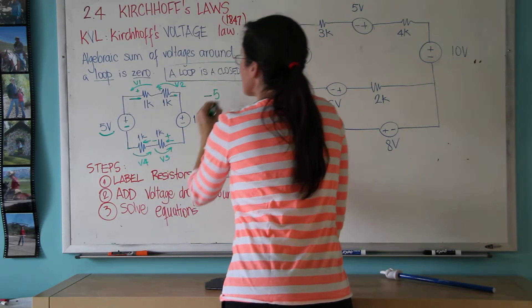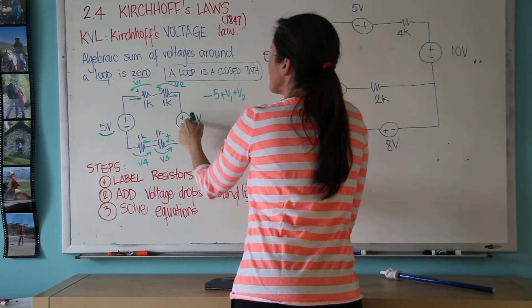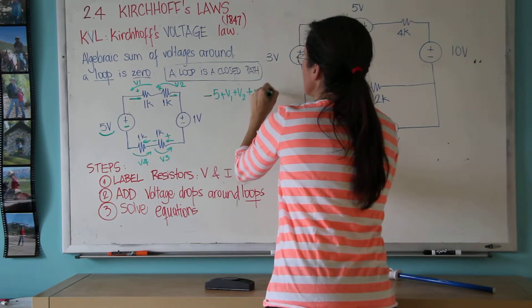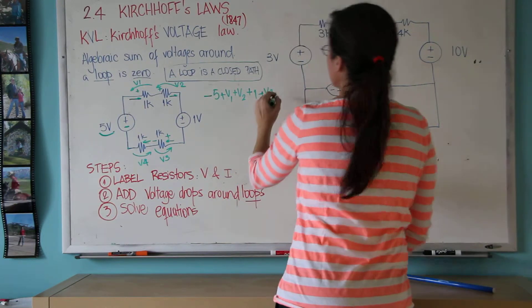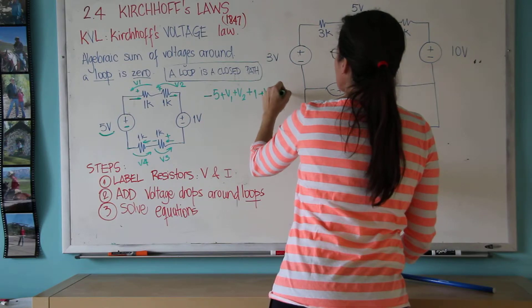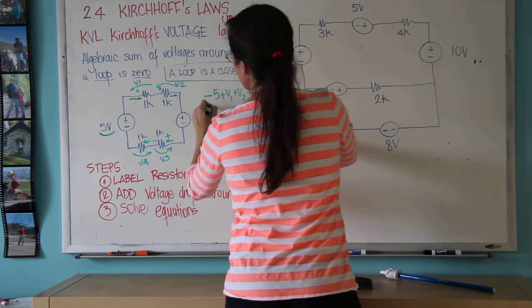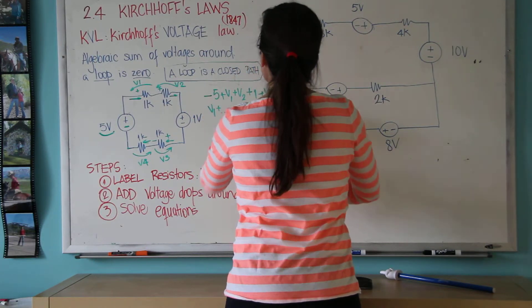And voltage four. So plus V1 plus V2 - now look, I found a plus - plus one volt, plus V3 plus V4 equals zero. So this is basically my equation for Kirchhoff's voltage law. The sum of V1 until V4 equals four volts.